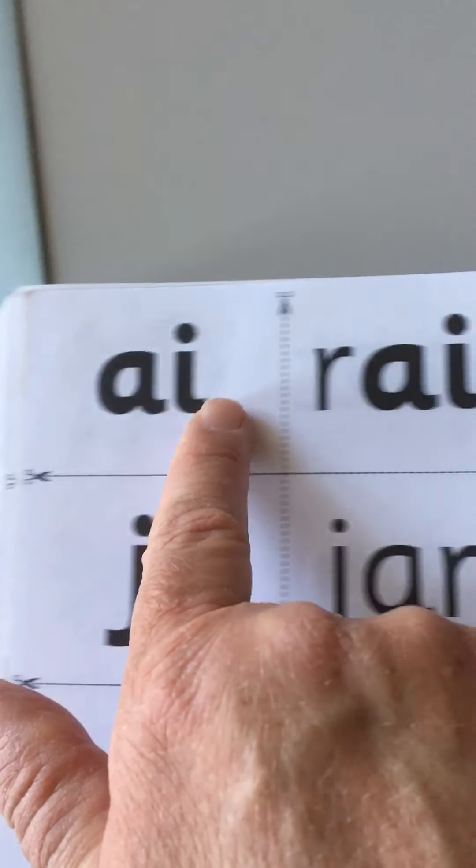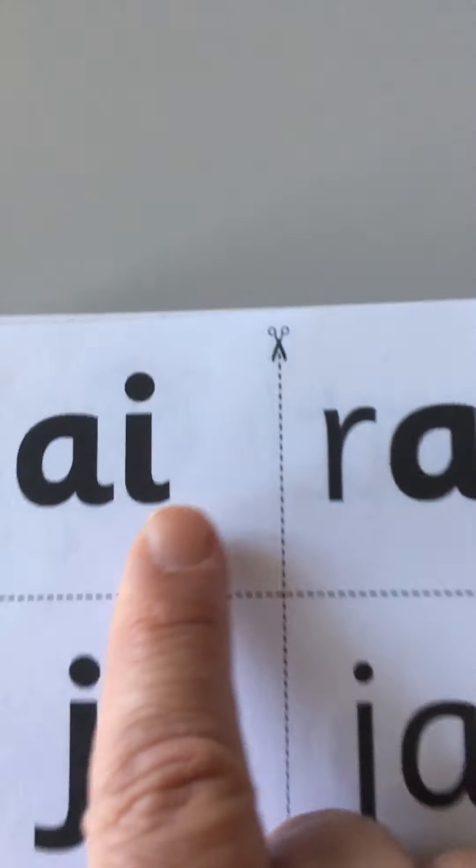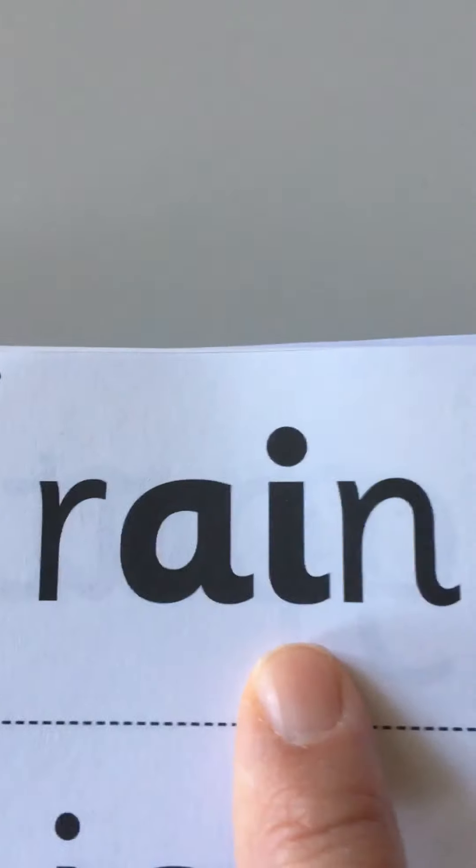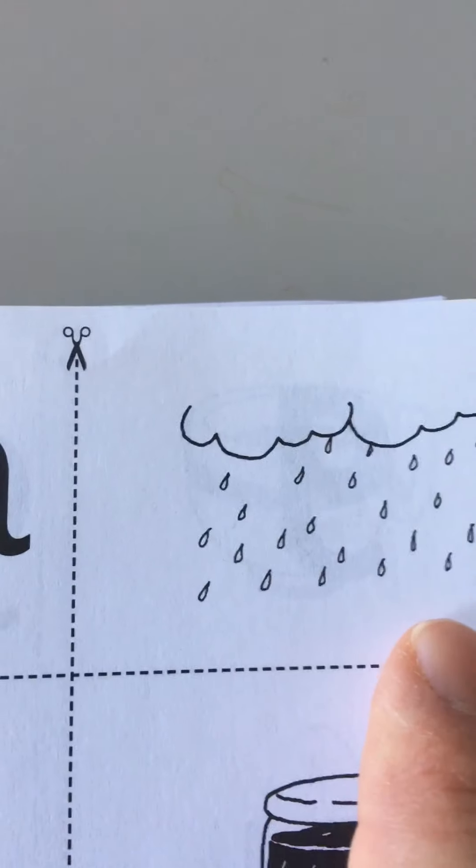I'm going to read across, okay? AI, the sound is A as in rain. We have a picture of rain.